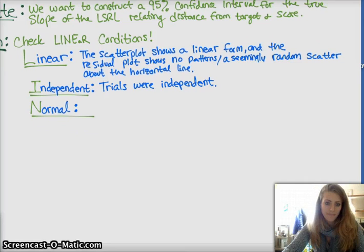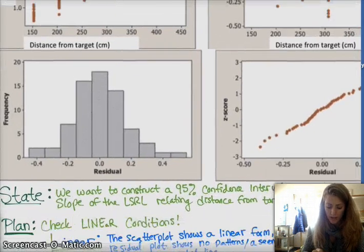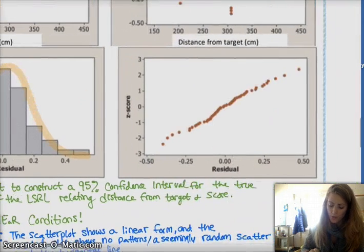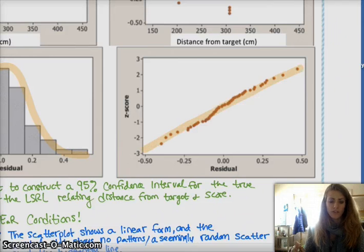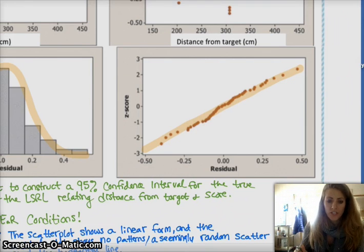Normal. For the normal, you want to check if the residuals are approximately normally distributed. So, you want to go back to either the histogram of the residual, or you go to the normal probability plot of the residuals and look for a linear pattern. And so, you can mention one or both of these in order to check that condition.